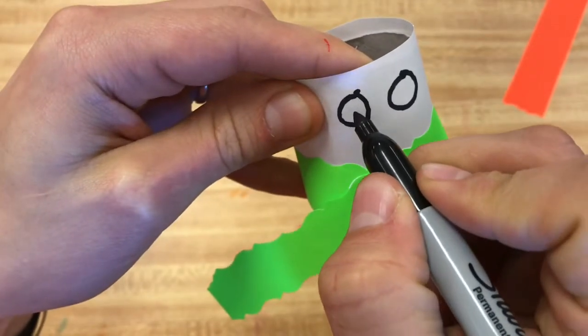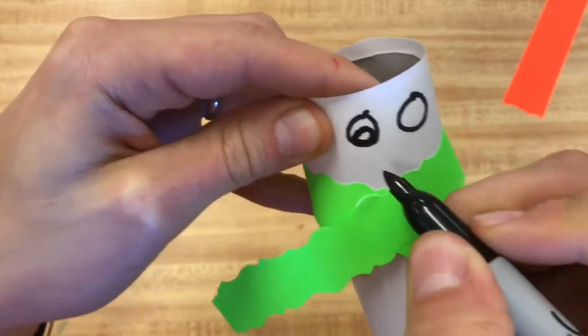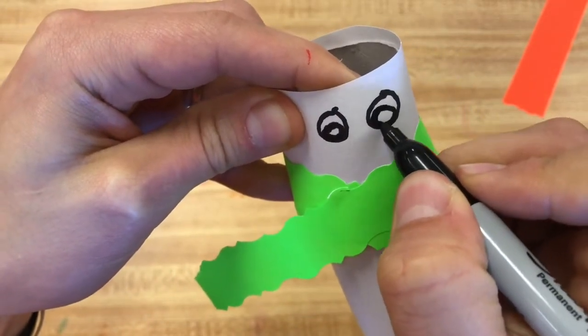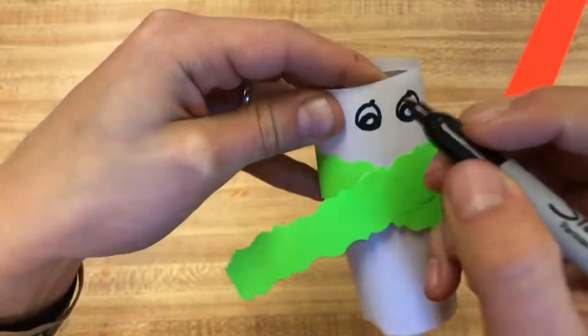You can leave a little white in there. Eyes will be a little bit more realistic if you want eyelashes—it could be a girl snowman—but I'm gonna leave mine a boy snowman.